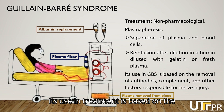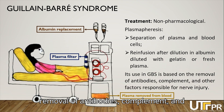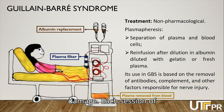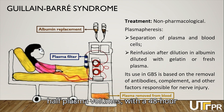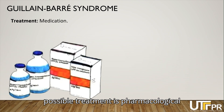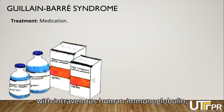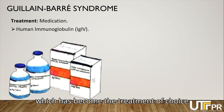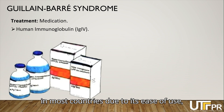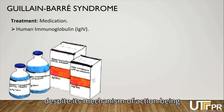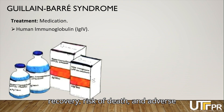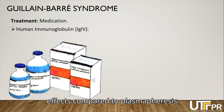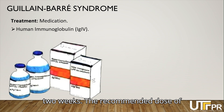Treatment for Guillabar Syndrome can be non-pharmacological through plasmapheresis, which involves separating plasma and blood cells, with the latter being re-infused after dilution in albumin diluted with gelatin or fresh plasma. Its use is based on the removal of antibodies, complement, and other factors responsible for nerve damage. Each session removes one to one and a half plasma volumes, with a 48-hour interval between sessions. Another possible treatment is pharmacological with intravenous human immunoglobulin, which has become the treatment of choice in most countries due to its ease of use, with efficacy and adverse effects compared to plasmapheresis showing similar results within two weeks.